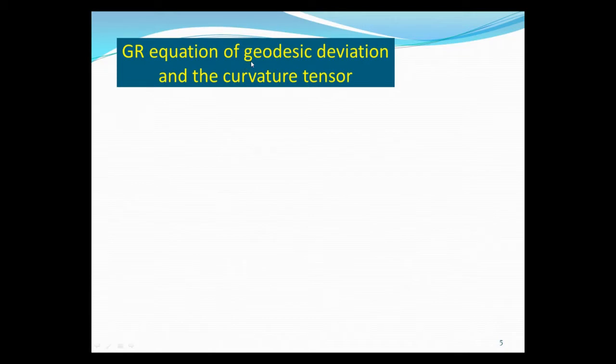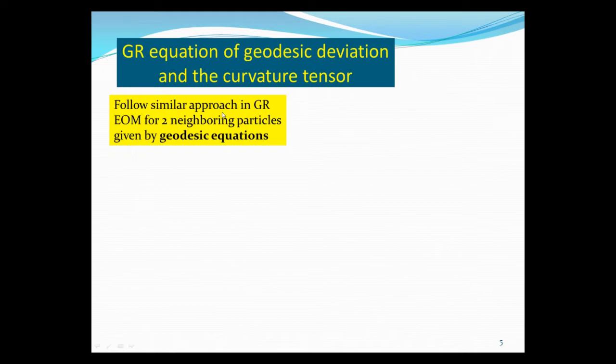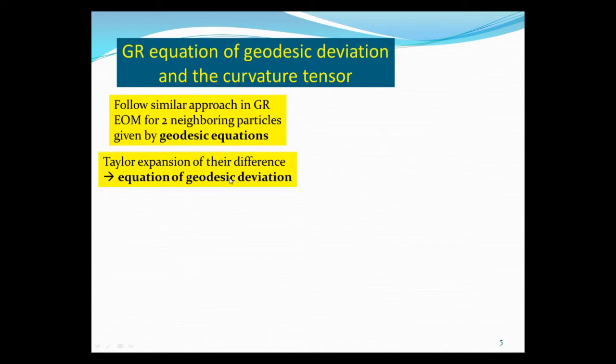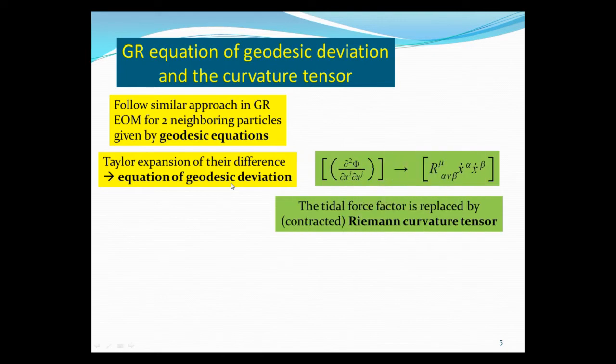You do the same thing for GR. Okay. Remember, equation of motion is now the geodesic equation. And so we show how the deviation of geodesics is related to curvature, because the second derivative of gravitational potential is the curvature. So two particles following the geodesic equation, and Taylor expand the difference. Okay. You get the equation of geodesic deviation. So what you'll find is that instead of the second derivative of the gravitational potential, you'll find it's replaced by second derivative of the metric. And that's just the Riemann curvature.